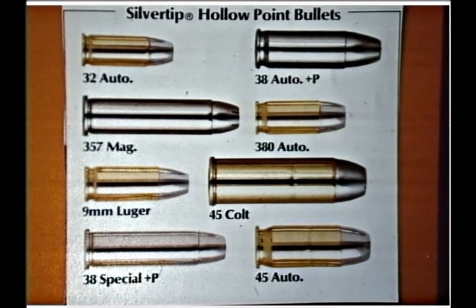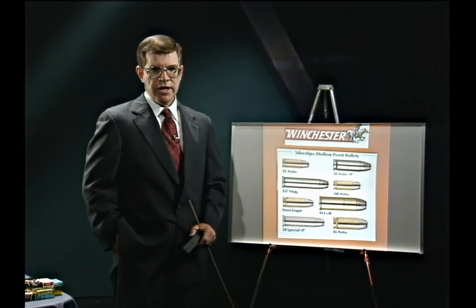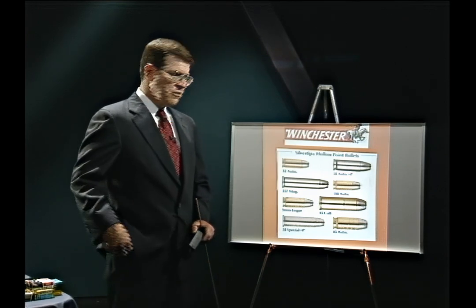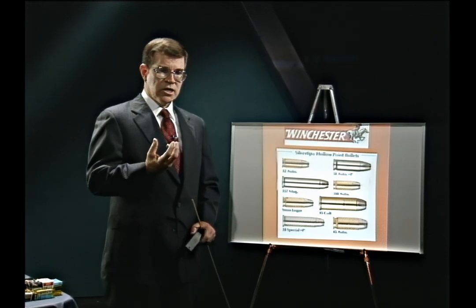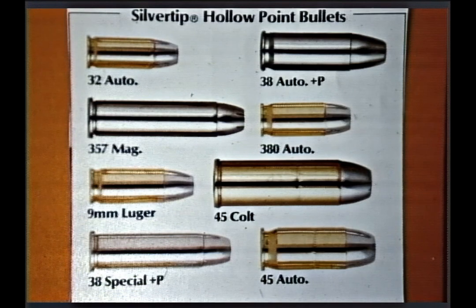Winchester's Silver Tip line has achieved popularity in law enforcement. Some — not all — have a unique construction in which the jacket around the lead core is composed of aluminum. So far we've discussed: lead bullets, lead bullets with thin copper plating, lead cores in copper jackets, steel bullets, and steel bullets with copper plating. Now we have a bullet with a lead core and an aluminum jacket — for example, the .380 automatic, .32 automatic, and .45 automatic entries in the Silver Tip line have aluminum jackets instead of copper.